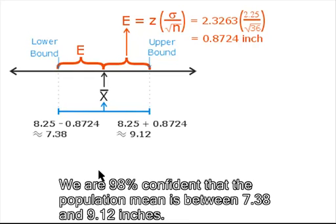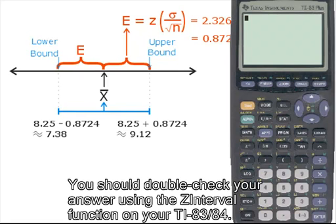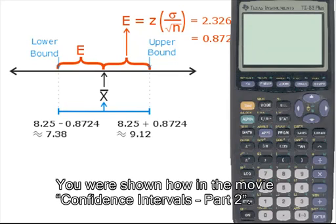We are 98% confident that the population mean is between 7.38 and 9.12 inches. You should double check your answer using the z interval function on your TI-83/84. You are shown how in the movie Confidence Intervals Part 2.